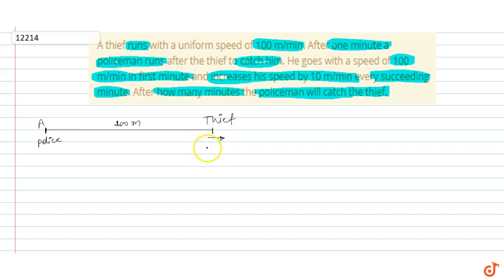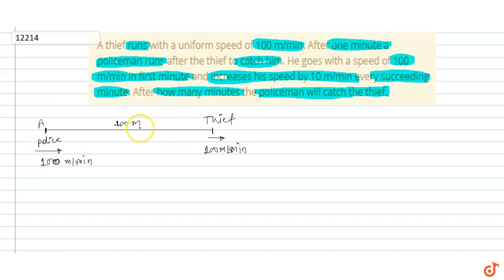The thief's speed is 100 meters per minute — constant. The police's speed is also 100 meters per minute at start. Police starts behind. If both have the same speed of 100 meters per minute, the thief will go 100 meters ahead and the distance between them will remain constant at 100 meters.